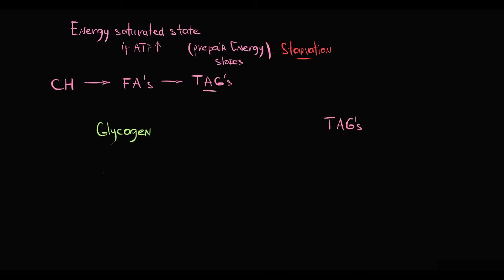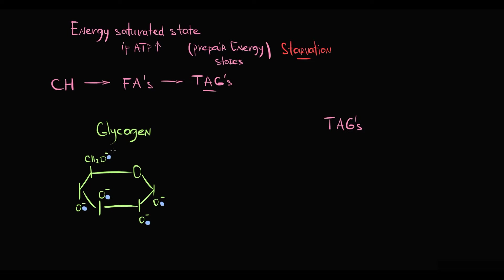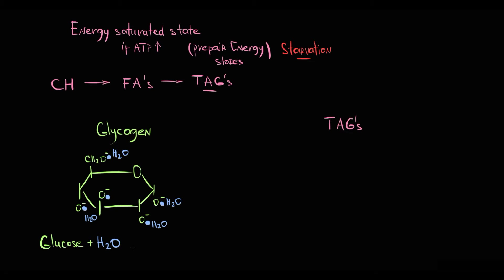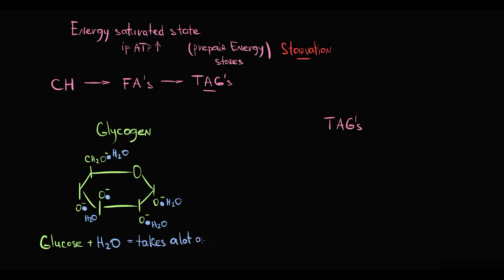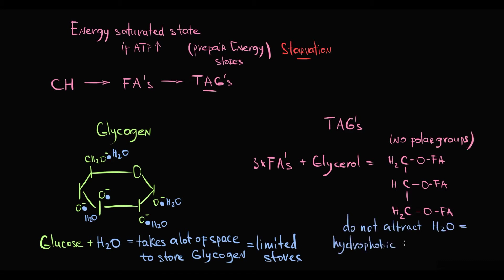Glycogen is the assembly of glucose molecules, and the problem is that glucose is a hydrophilic molecule because of its hydroxyl groups, which attract water. So when tissue stores glucose molecules, it also stores water. Glycogen is therefore not optimal because it takes a lot of space. In contrast, triacylglycerols are totally hydrophobic — they do not attract water, making them very compact substances to store. So triacylglycerols are the best storage material in our organism.